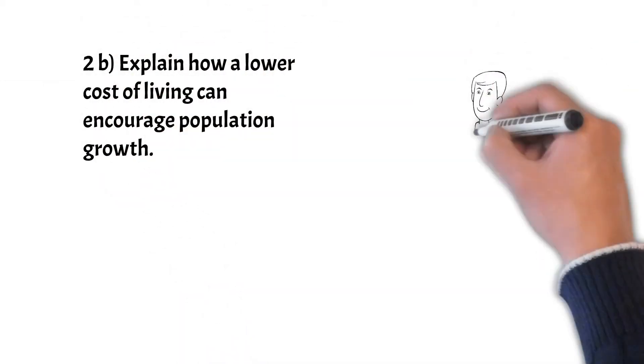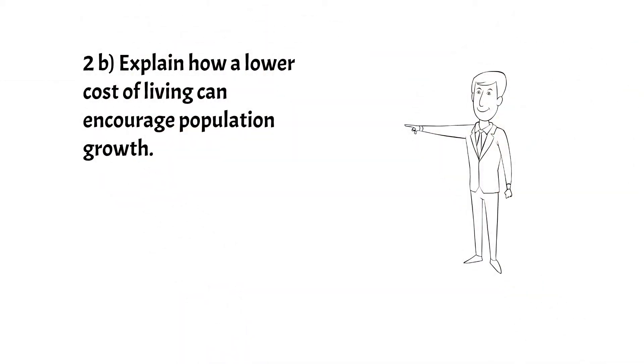Next, question 2b: explain how a lower cost of living can encourage population growth. What the examiner is after here is why. So you need to explain why a lower cost of living will encourage this. A lower cost of living would mean it is cheaper to bring up a child. Both education and healthcare costs will be lower. Parents don't have to work so hard giving them more time to raise children. A lower cost of living could lower the death rate as healthcare is more affordable. People can live longer. A lower cost of living could encourage net migration because it is cheaper to live in that country.